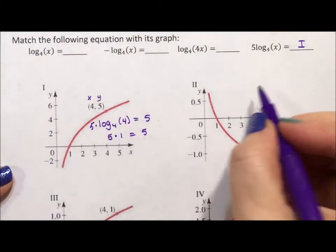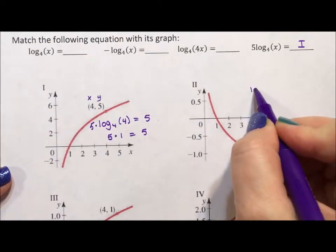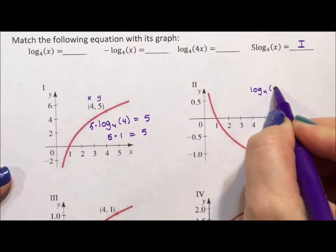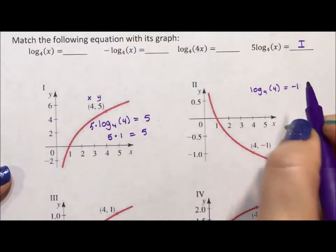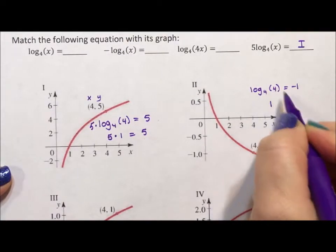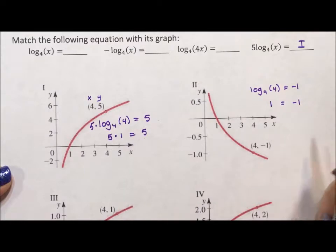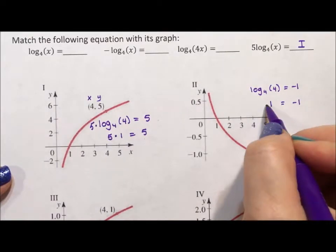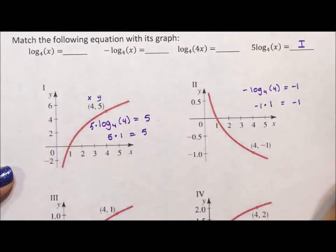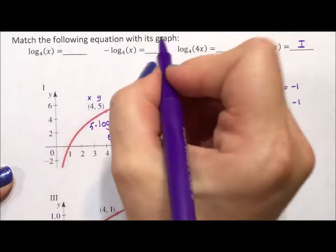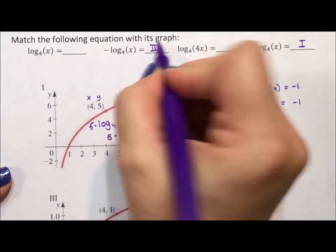For this one, if we start off the same way, log base 4 of 4 equals negative 1. Well again, this is 1 equaling negative 1. That doesn't work. So to get it to be negative 1, we need to multiply this by negative 1, which means that needs to be a negative, which is right here. So this is our second graph.